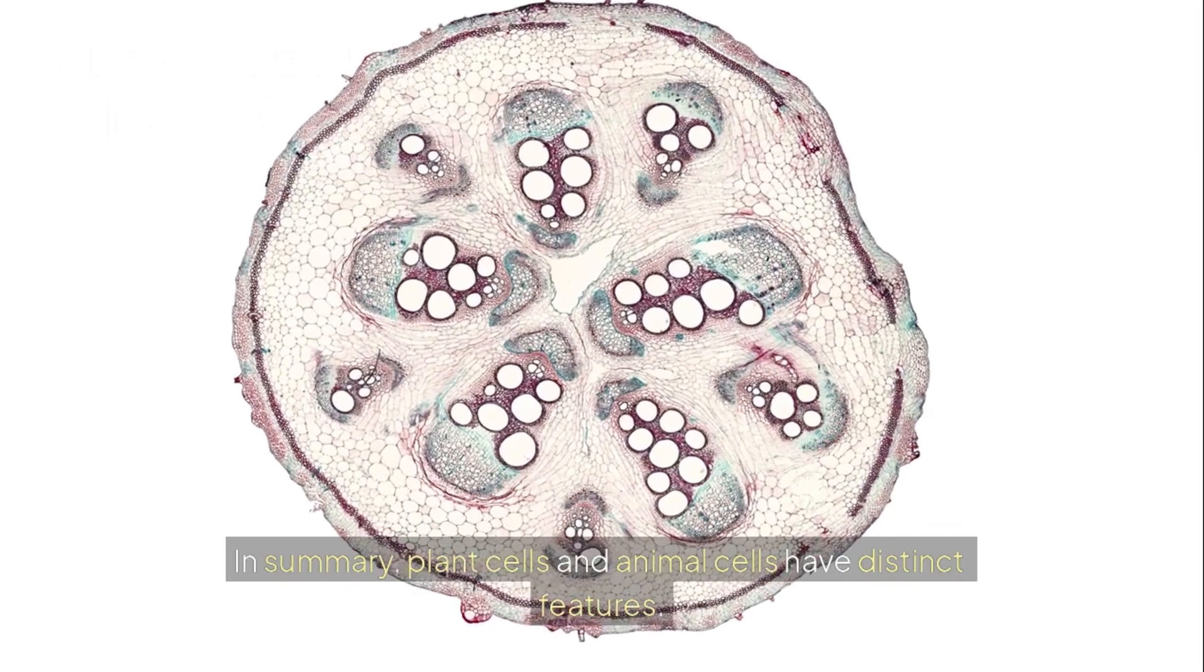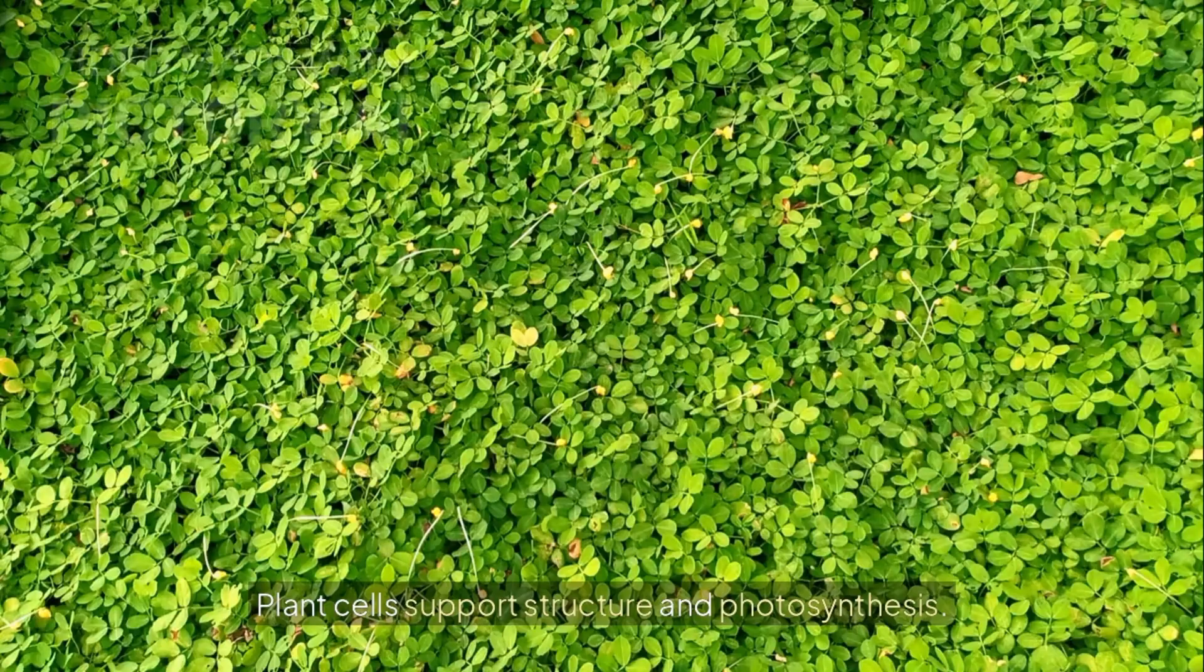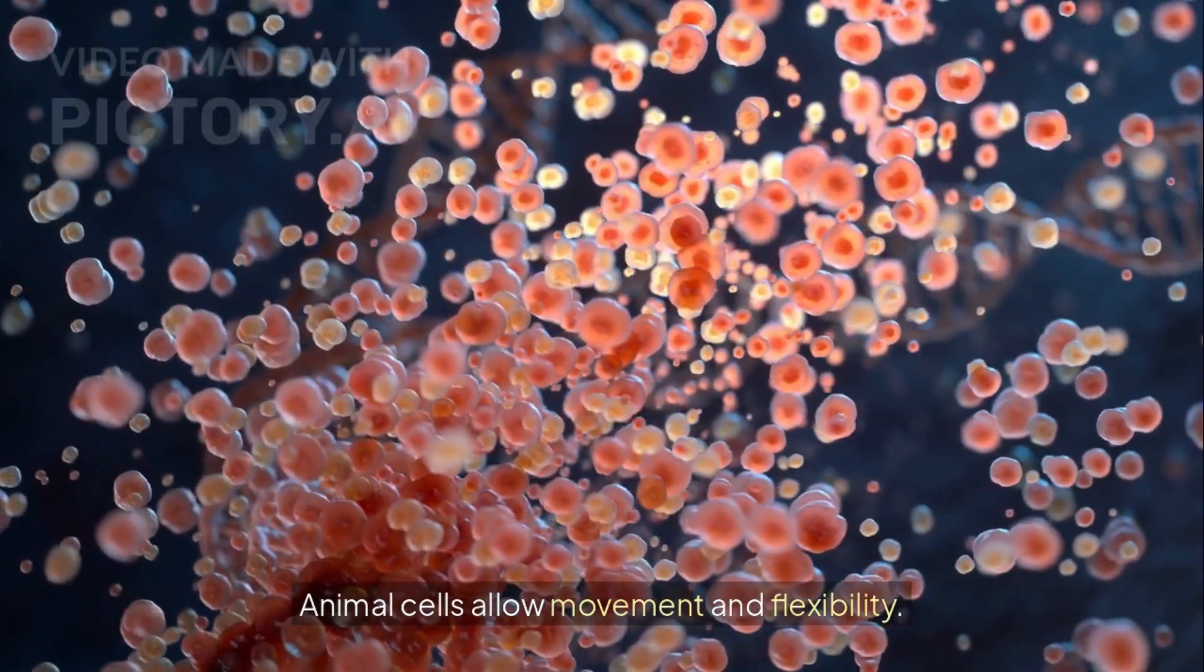In summary, plant cells and animal cells have distinct features. Plant cells support structure and photosynthesis. Animal cells allow movement and flexibility.